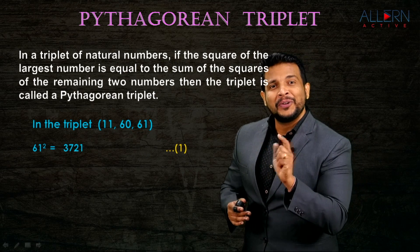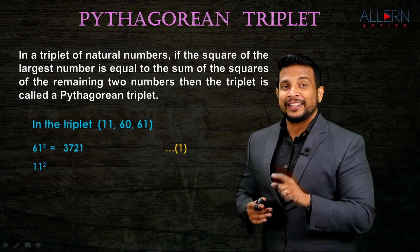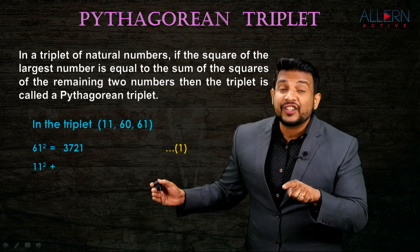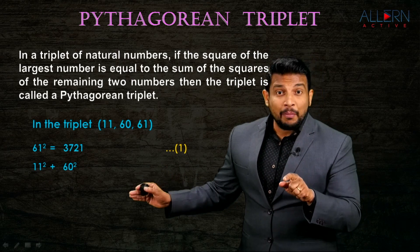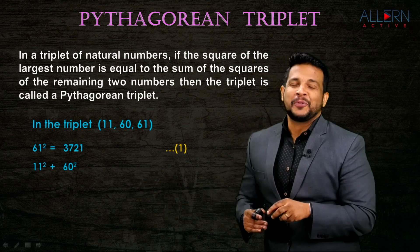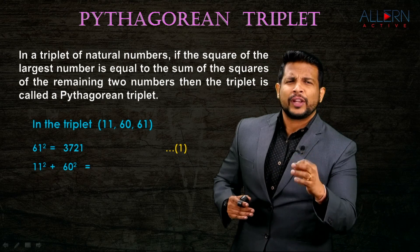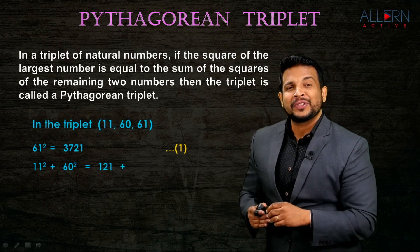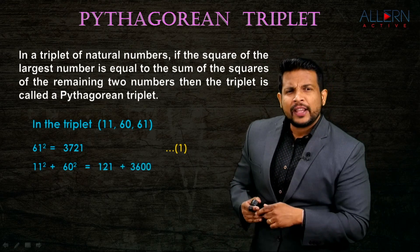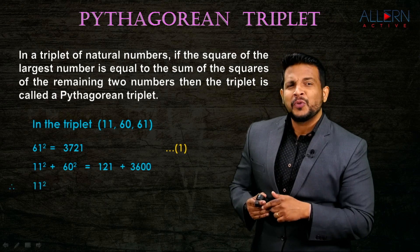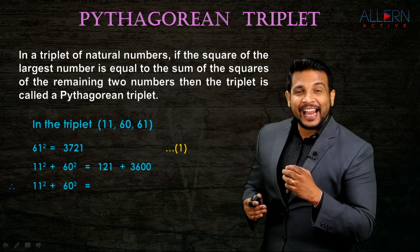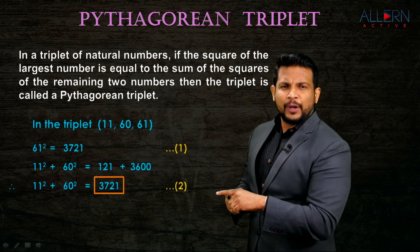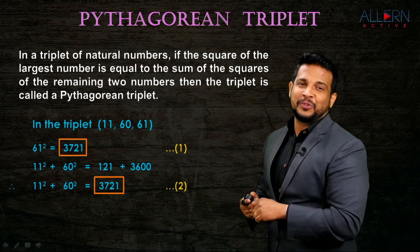Now we do the sum of the squares of the remaining two numbers - which are 11 and 60. So: 11² + 60² = 121 + 3600 = 3721. That is result number two. Observe result number two and result number one - the values are equal.